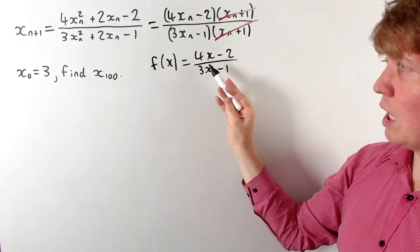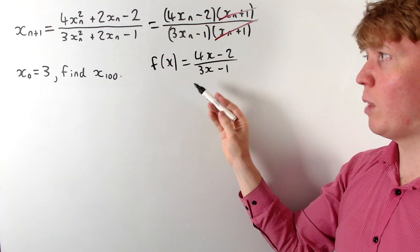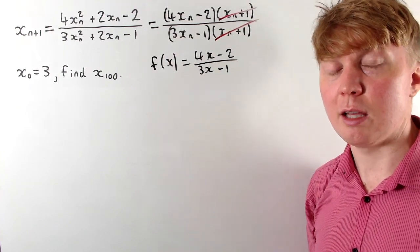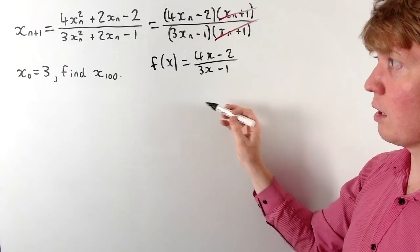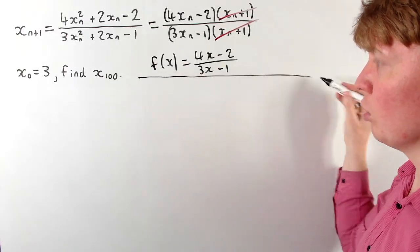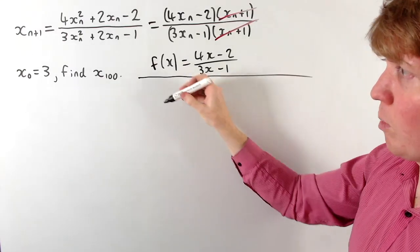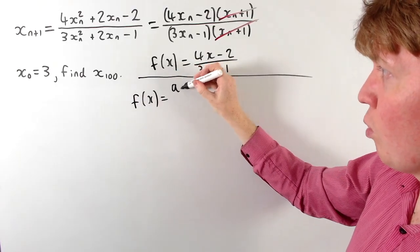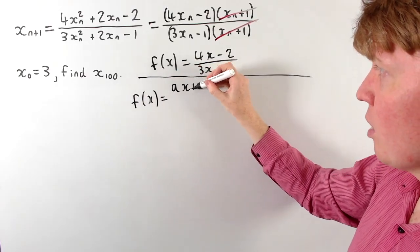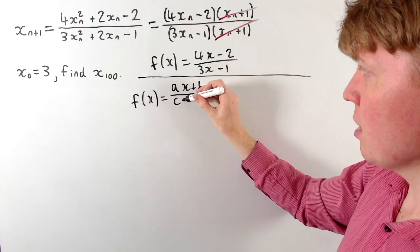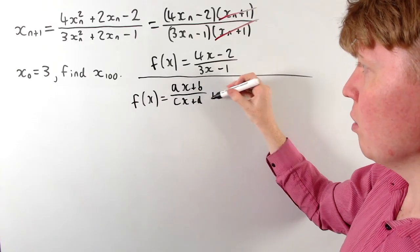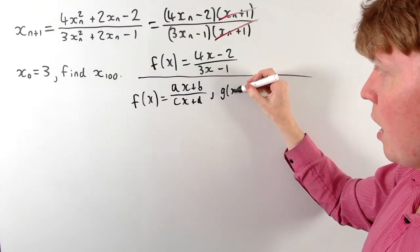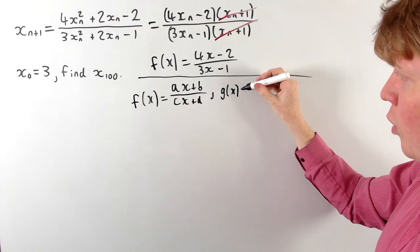We're going to substitute 3 into this function, and then substitute what we get back in, doing this 100 times. This function f(x) is actually a special type called a Möbius transformation. More generally, if f(x) = (ax + b) / (cx + d) and we have another Möbius transformation, there's a really nice property when we compose the two functions.